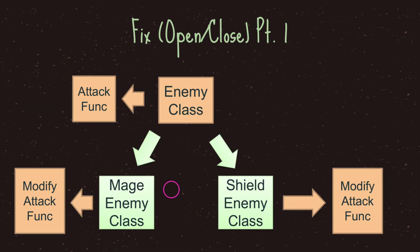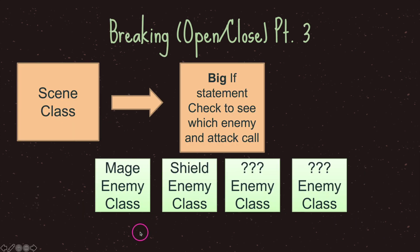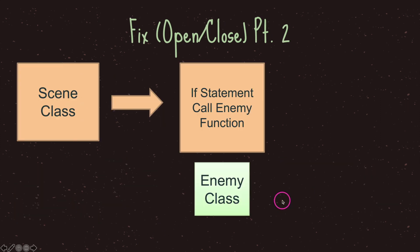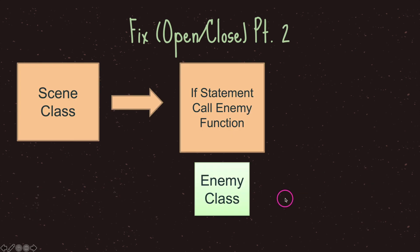Instead of having an if statement for each specific type — for example, checking if we're in the mage enemy class or the shield enemy class — we can just check if our class inherits from the enemy class and then call the attack function. When we call it, we may be calling the attack from the mage enemy or shield enemy class. In the scene class, we only care that it's an enemy class and that it has an attack function.